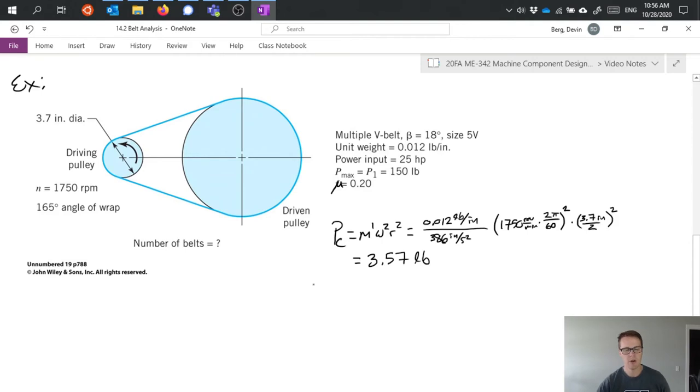Our next equation: P1 minus Pc over P2 minus Pc equals e to the mu phi over sine beta.